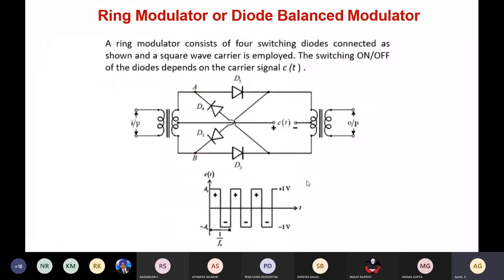The other method is the ring modulator, which is used to generate a double sideband suppressed carrier signal. The ring modulator consists of four switching diodes, which are controlled by the carrier signal c(t). This c(t) is a periodic signal that acts as the carrier waveform.